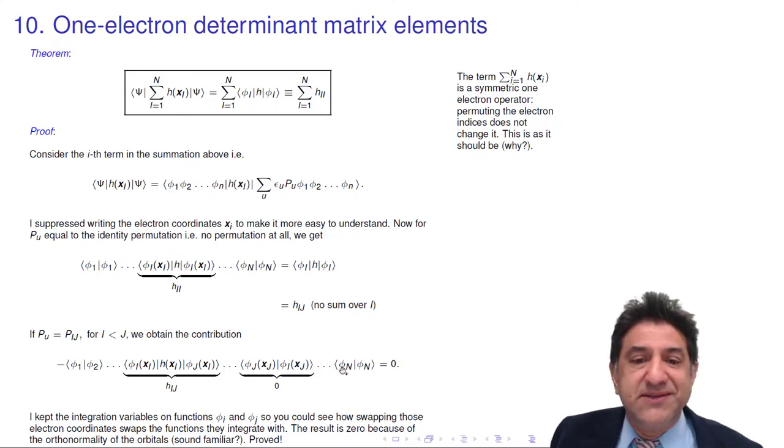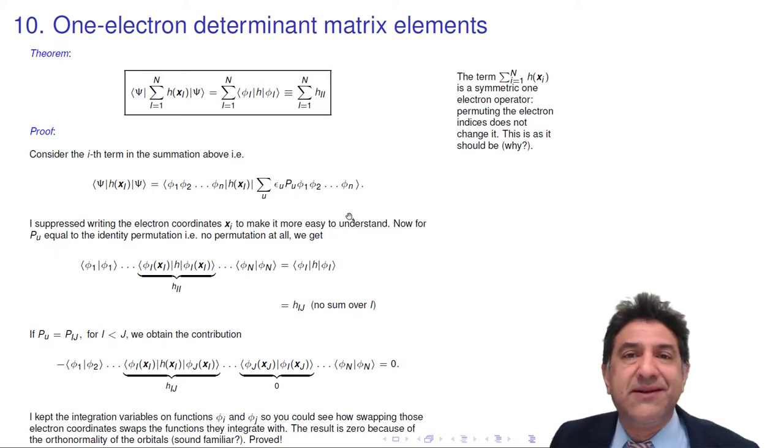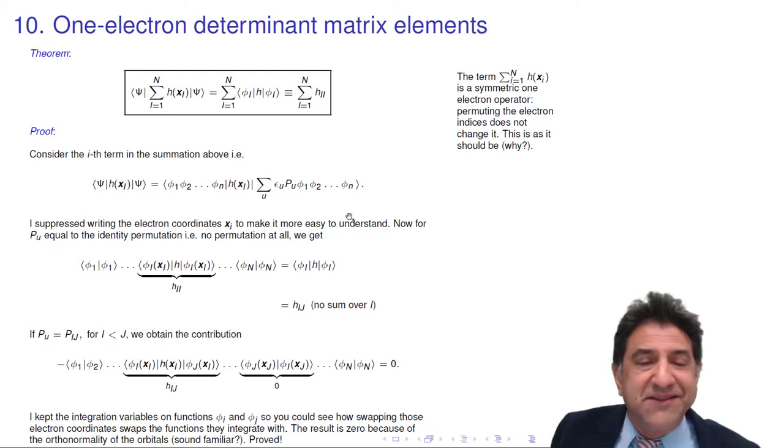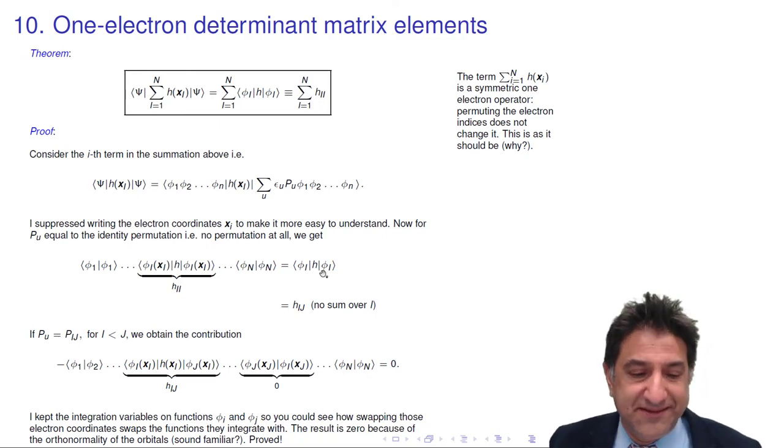Now the result is easy to see. When we sum that up, all the unit permutations, we just get h i i. Fantastic, isn't it? But n factorial terms squared are all eliminated to give us just one term. How fantastic is that? See you later.